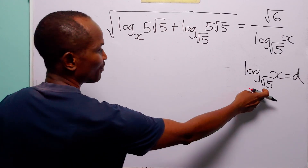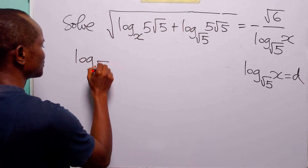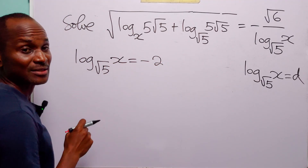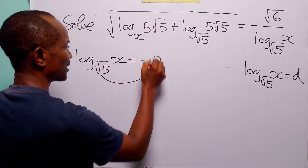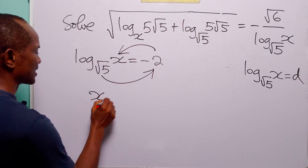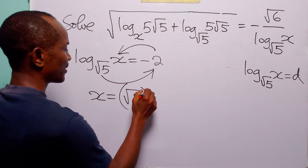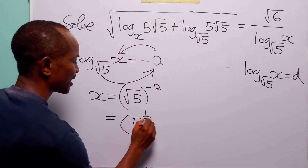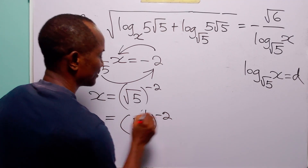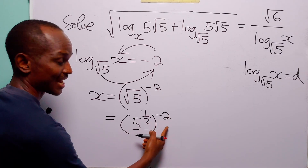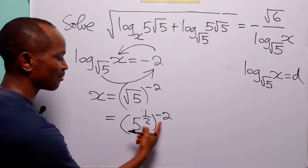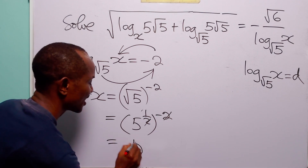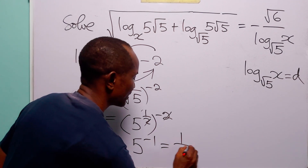Now to find the value of x, we go back to the substitution. We have that log to base root 5 of x is equal to d, which is equal to minus 2. This means that root 5 to the power minus 2 is equal to x. So x equals root 5 to the power minus 2. Since root 5 is 5 to the power half, and this is raised to the power minus 2, we multiply the two powers: half times minus 2 equals minus 1. So x equals 5 to the power minus 1, which is the same as 1 over 5.